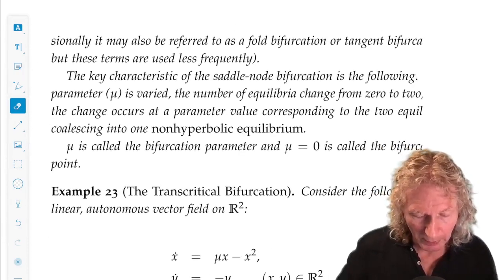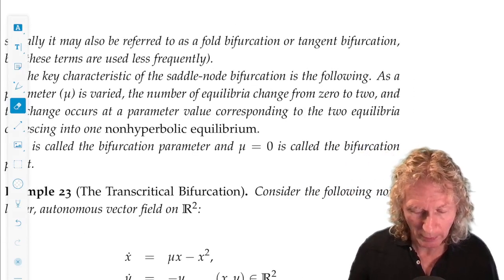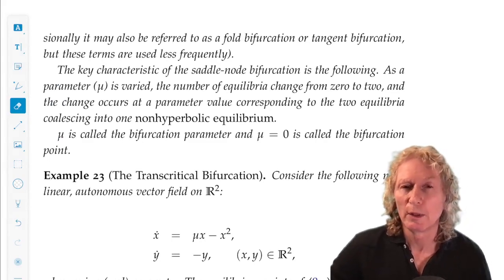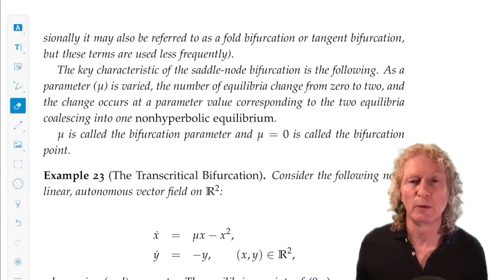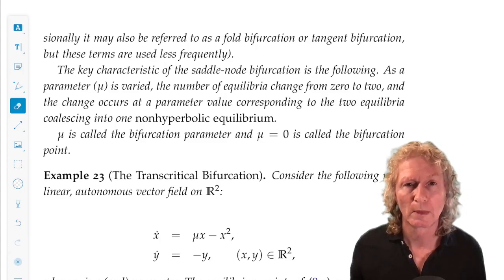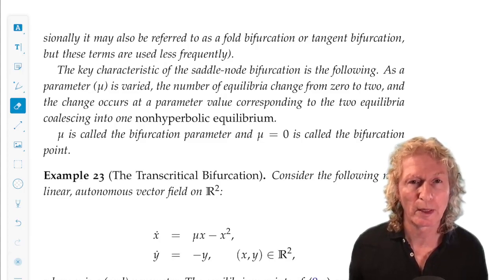So, the key characteristic of the saddle node bifurcation is the following. As the parameter mu is varied, the number of equilibria change from zero to two. The change occurs at a particular parameter value, mu equals zero,